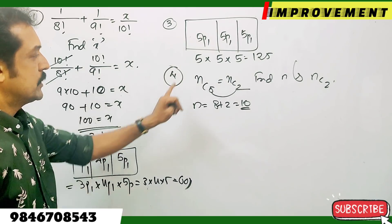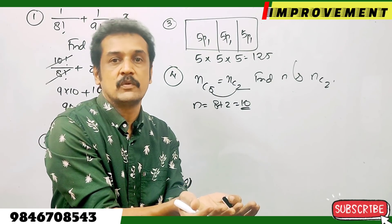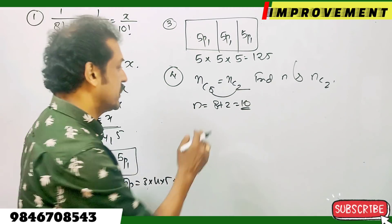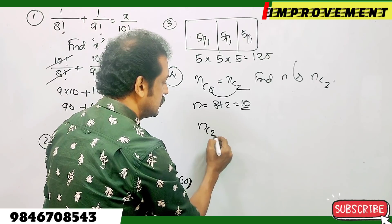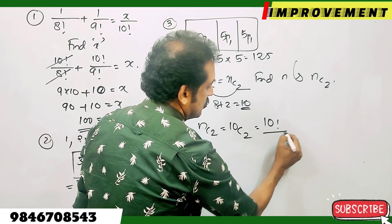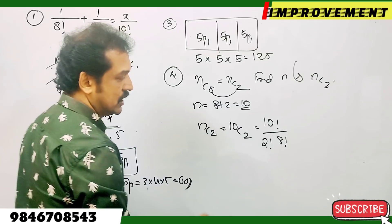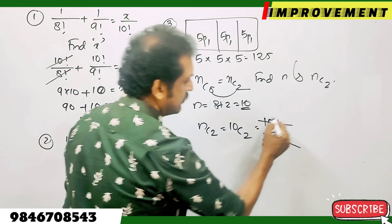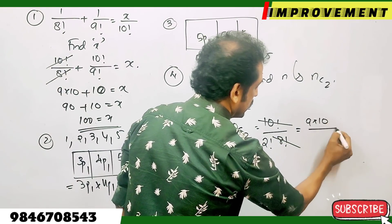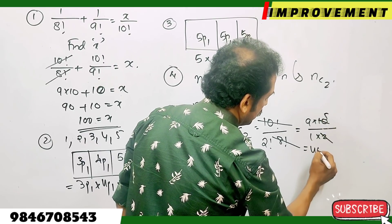If NCr equals NCs, then r plus s equals N. Therefore NC2 equals 10C2. 10C2 equals 10 factorial divided by 2 factorial into 8 factorial. The answer is 45.